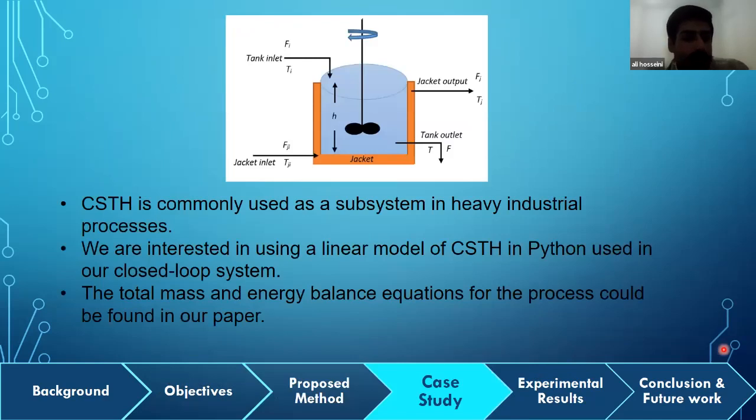I'm going to talk about our case study. CSTH or Continuous Stirred Tank Heater is commonly used as a subsystem in heavy industrial processes. The CSTH process is depicted above this slide. As you can see, this system has four inputs and four outputs. The flow rate of the tank inlet was used to adjust the tank temperature in our closed loop. We are interested in using a linear model of CSTH in Python to be used in our closed-loop system. The total mass and energy balance equations for this process could be found in our paper.